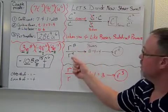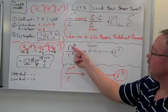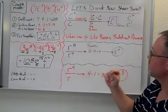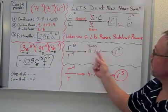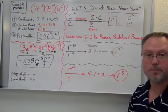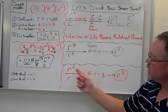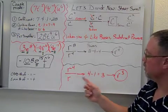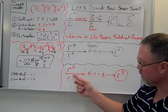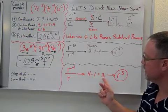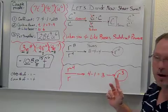So if I have r to the 8th, r to the 4th, I have like bases, so I know my base is going to be r. 8 minus 4 gives me 4, so that's my power. So r to the 4th over r, again, 4, and this is our 1 here, minus 1 gives us 3, so we have r to the 3rd power.